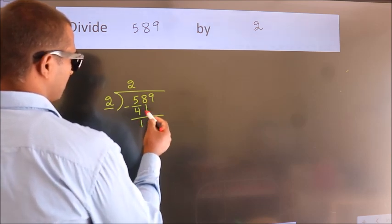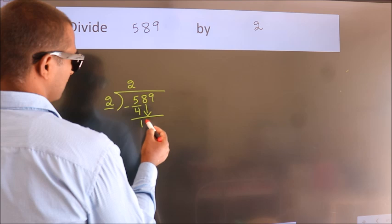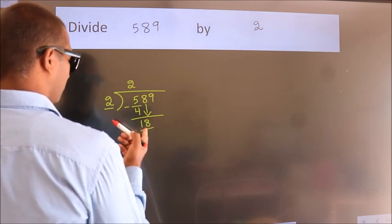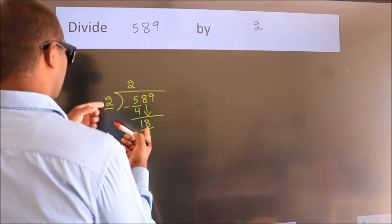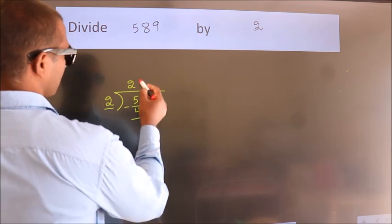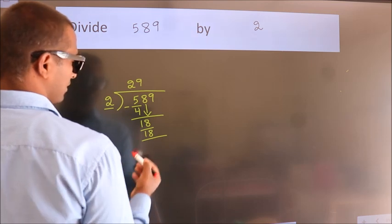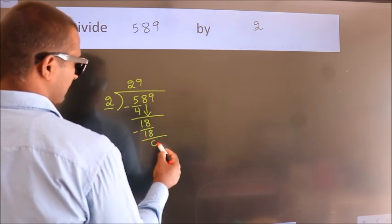After this, bring down the beside number. So 8 down, making 18. When do we get 18 in the 2 table? 2 times 9 is 18. Now we subtract. We get 0.